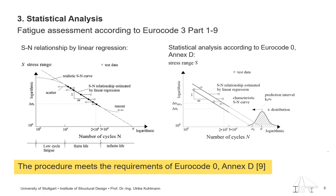This leads me to the next slide about the statistical analysis. The investigation of different statistical approaches for analyzing the fatigue test data from the database was a big part within this research project. Finally, we chose a procedure that meets the requirements of Eurocode 0. For the resistance model on the left, we assume that there is a logarithmic linear relationship between the stress range S and the number of cycles to failure N in the finite life region according to Basquin. It should be emphasized that this is a model just for the finite life region. Nearly all the test data in the database is allocated to this region.